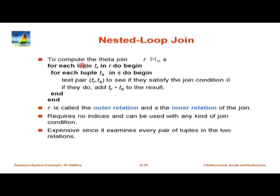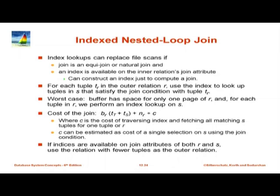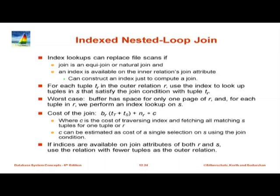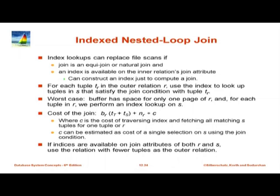The relation in the outer loop is called the outer relation, and the relation in the inner loop is called the inner relation. This is very general but also very expensive because it is quadratic. It is not feasible for large relations, although occasionally for very complex join conditions with small relations you may be forced to use it.